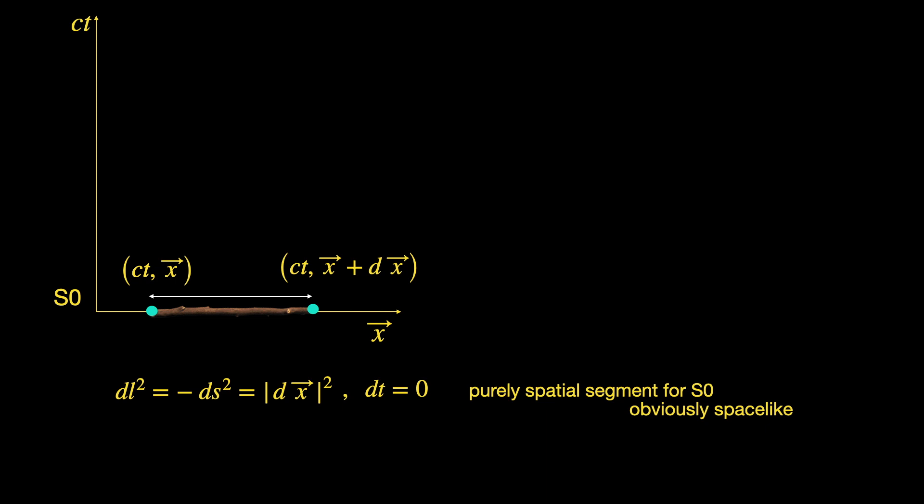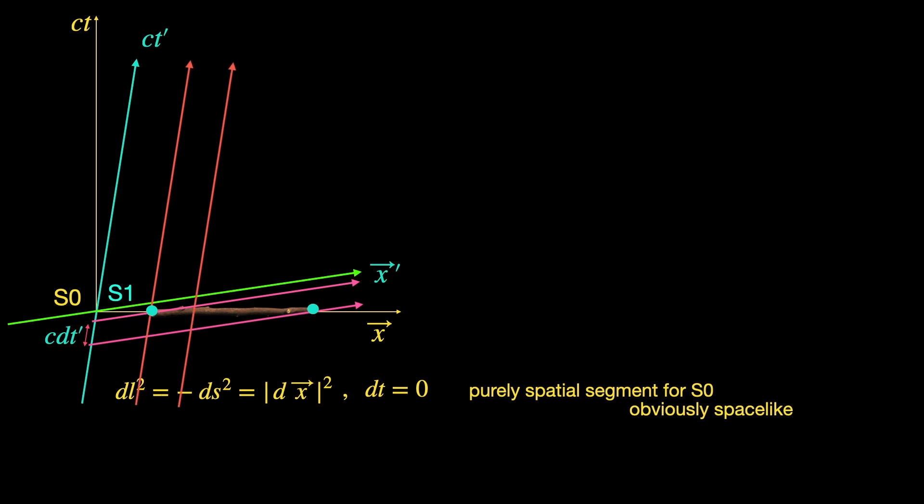But if the S1 frame observer measures the spacetime interval between the same two events, he does not get a purely spatial segment. Because he is not measuring the length of the stick here. But he is just looking at the same two spacetime events that we have used to measure the length of the stick. We can figure out what he will get if we draw the spacetime diagram of S1 frame on top of ours, like we have done earlier. Note how the two ends of the stick appear separated in time as well as in space according to the S1 frame guide.